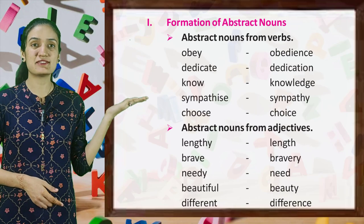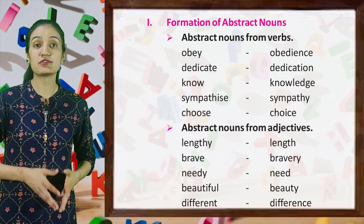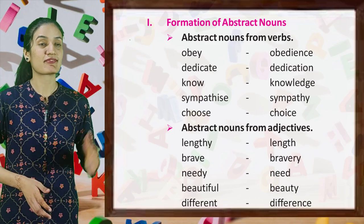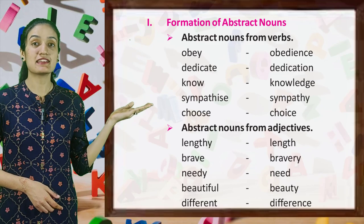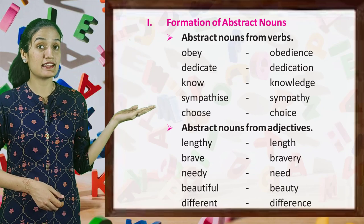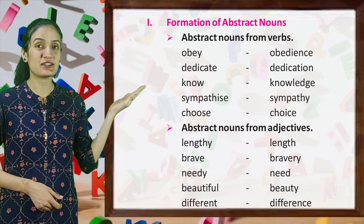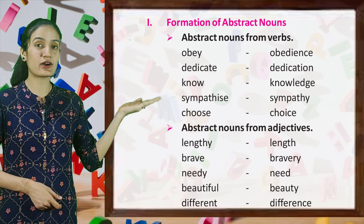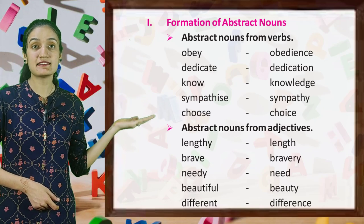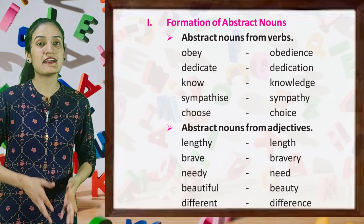Let's see the formation of abstract nouns. Abstract nouns from verbs: obey → obedience, dedicate → dedication, know → knowledge, sympathize → sympathy, choose → choice.